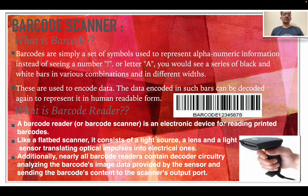What is a barcode reader? A barcode reader is an electronic device for reading printed barcodes. Like a flatbed scanner, it consists of a light source, a lens, and a light sensor translating optical impulses into electronic ones. Additionally, nearly all barcode readers contain decoder circuitry that analyzes the barcode image data provided by the sensor and sends the barcode content to the scanner output.